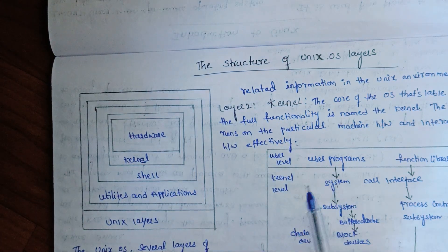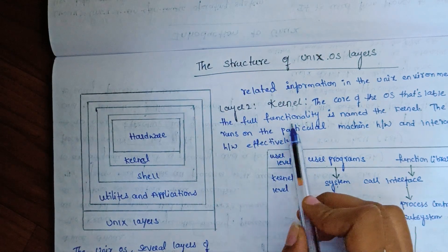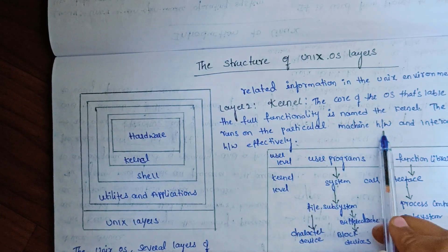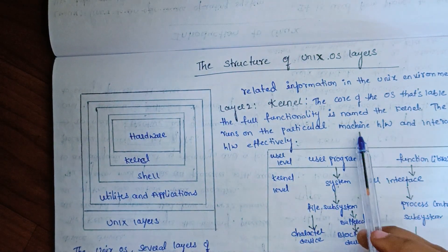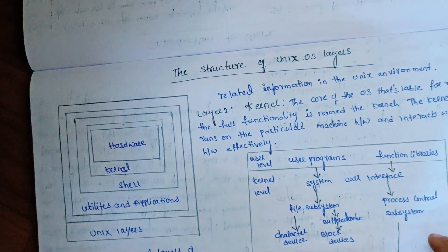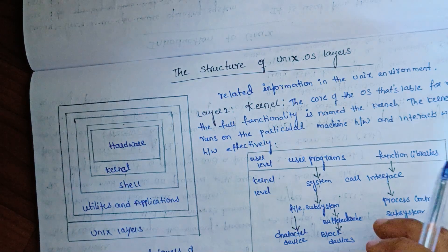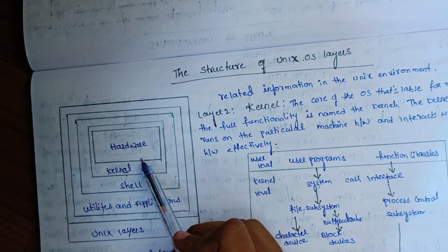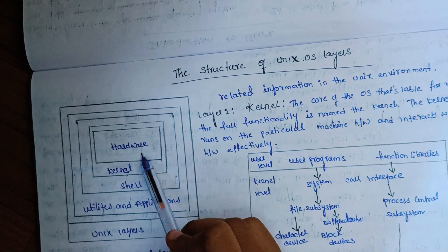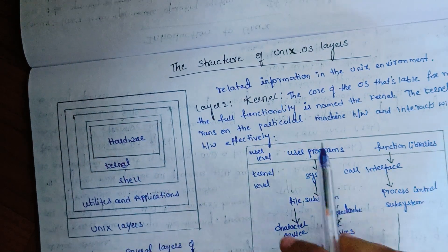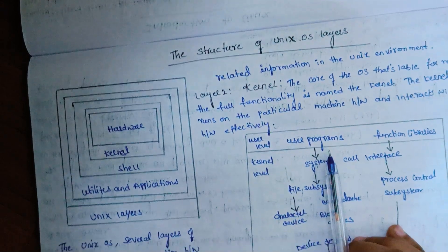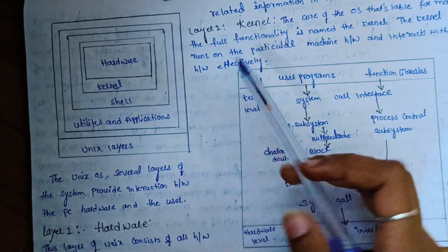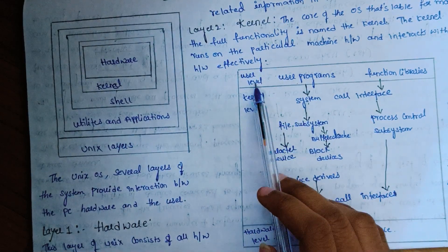Coming to layer 2 — the kernel. The kernel is the core of the operating system, responsible for maintaining full functionality. The kernel of Unix runs on the particular machine hardware and interacts with the hardware effectively. There are three levels within the kernel.